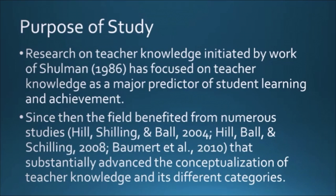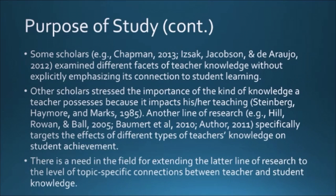The pioneering work on teacher knowledge was conducted by Shulman in 1986. He focused on teacher knowledge as a major predictor of student learning. Other scholars like Haley, Bowen, and Skilling propose certain categories of teacher knowledge such as pedagogical content knowledge and subject matter knowledge. Some studies focus on certain phases of teacher knowledge, explicitly connections with student learning, and how teacher knowledge impacts teaching and student achievement.